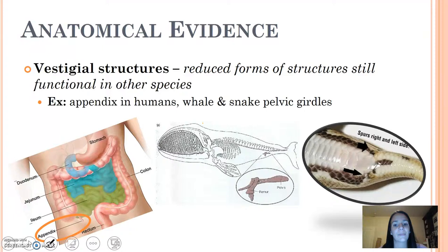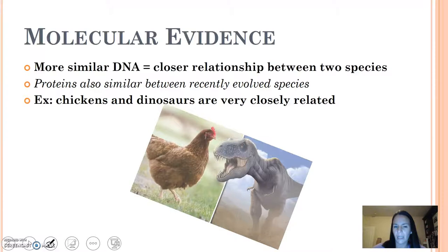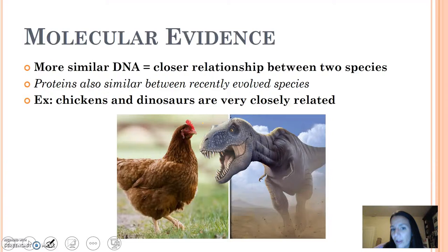Molecular evidence talks about DNA. The more similar the DNA is between two organisms, the closer the relationship. Protein also shows similarities. An example here is chickens and dinosaurs — they are very closely related, more so than modern-day reptiles and dinosaurs.